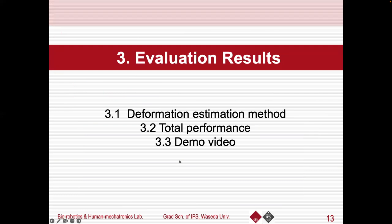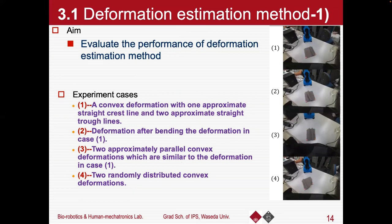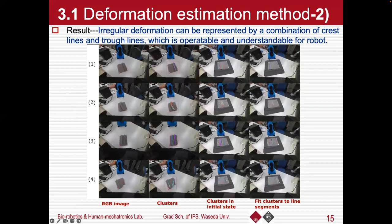Now for the evaluation results. Firstly, we evaluate the performance of our deformation estimation method on different deformations of a hand towel, which include straight deformation, curved deformation, two similar parallel deformations, and random distributed deformations. The result is shown in this figure. Our deformation estimation method can represent the deformation of flexible objects by a combination of crest-lines and trough-lines. And for curved deformations like case two, they are represented by a series of connected straight-line segments.